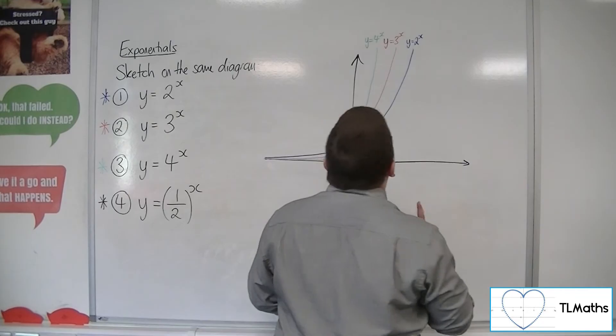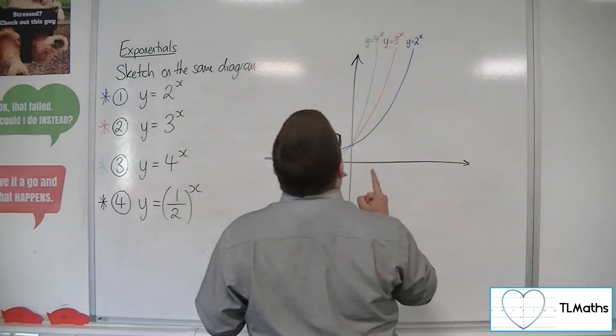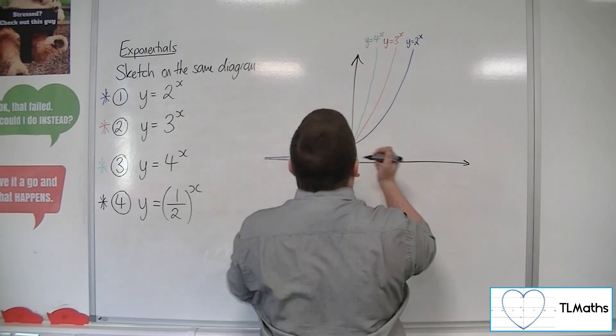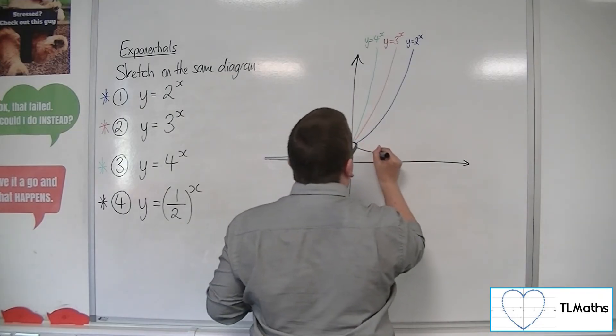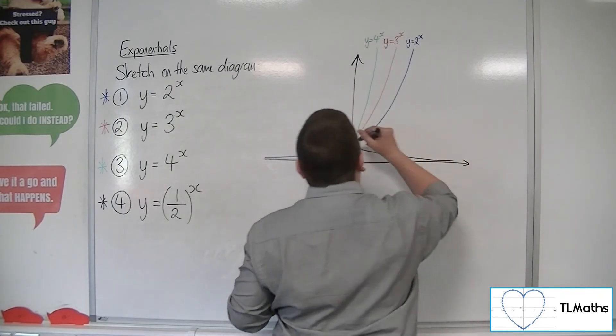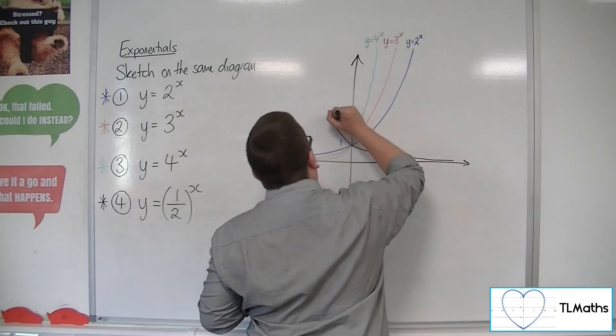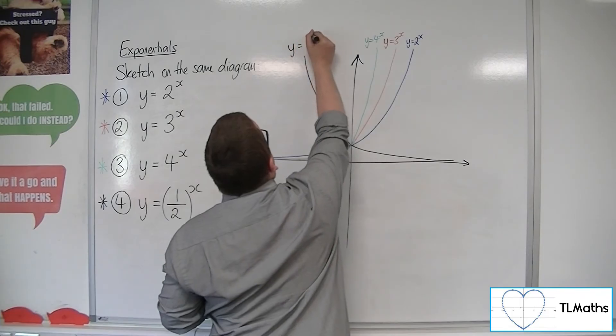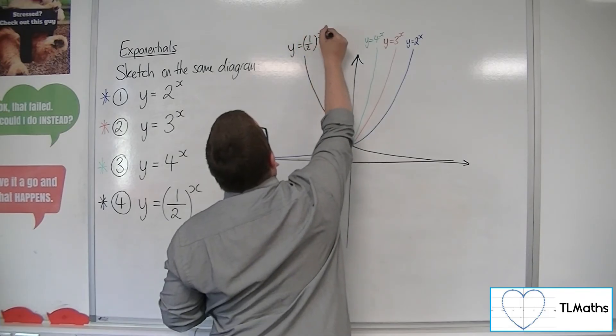So actually, it's going to look just like that y equals 2 to the x, but the mirror image. So there is y is equal to 1/2 to the x.